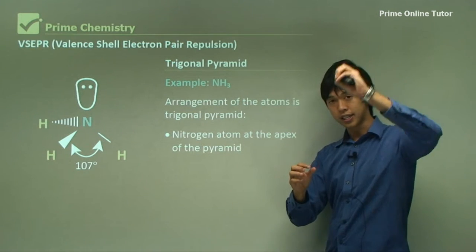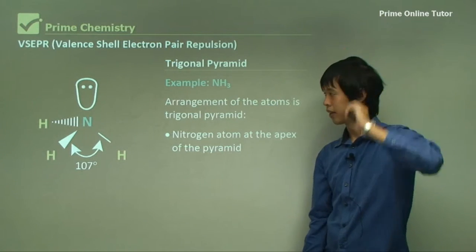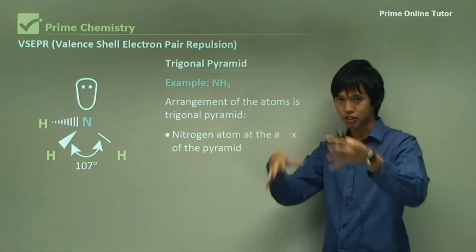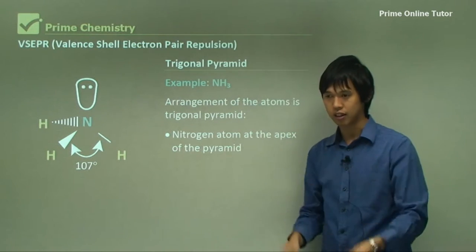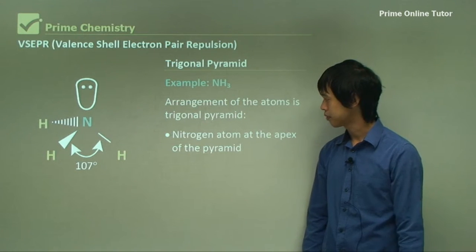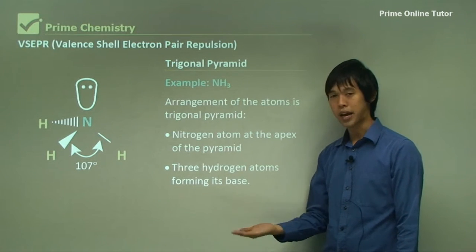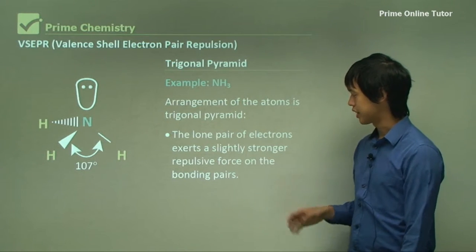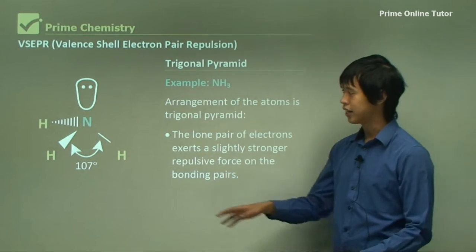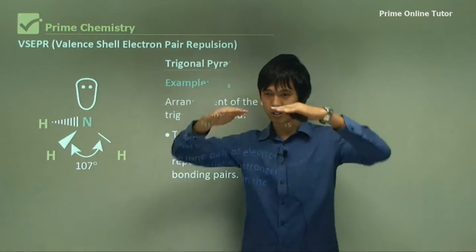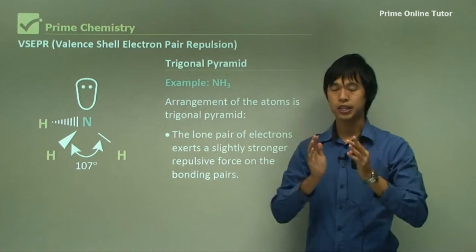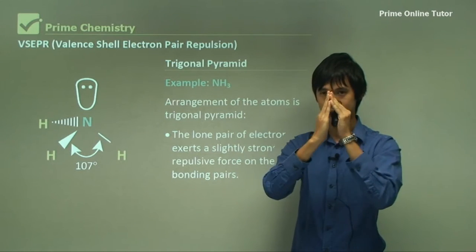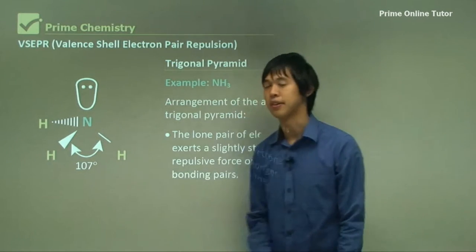The arrangement of the atoms is trigonal pyramid. And instead of the nitrogen being in the center with stuff around it, it's actually at the top. So it's the apex of the pyramid. And then the other hydrogens go down into the corners, the vertices of the pyramid. So three hydrogen atoms form the base of the pyramid. The lone pair of electrons exerts a slightly stronger repulsive force on the bonding pairs. And that's why the angle is slightly smaller, because the repulsive force of this is quite strong, compared to the tetrahedron. So it pushes the bond slightly closer together, which is 107, as opposed to 109.5.